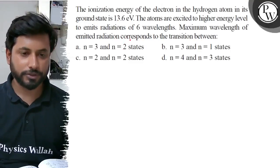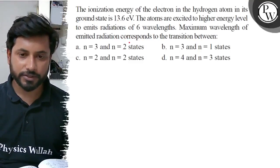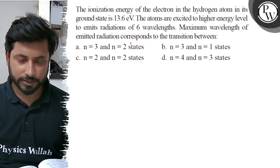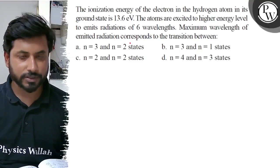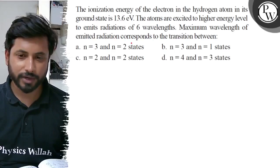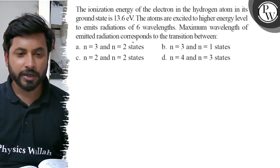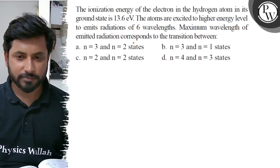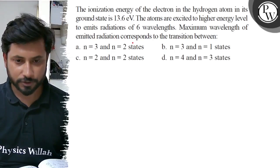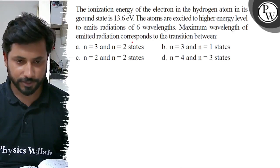Hello student, let us see the question. The ionization energy of electron in hydrogen atom in its ground state is 13.6 electron volt. The atoms are excited to higher energy levels to emit radiations of 6 wavelengths. Maximum wavelength of the emitted radiation corresponds to the transition between